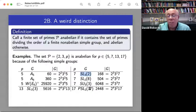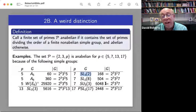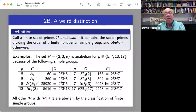So examples. The set P equals 2, 3, and then some other prime. It's an-abelian, at least for P in 5, 7, 13, and 17, because of the following simple groups. So maybe we can start with A5. So A5, it has order 60.